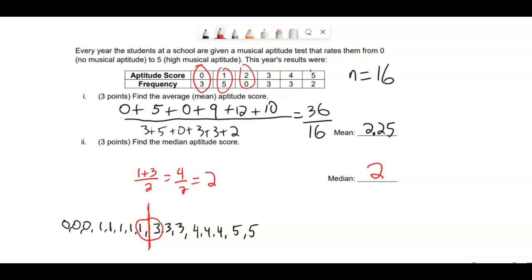If there's an odd number, there will be an actual number in the middle. If there's an even number, there's a gap in the middle. That's when you mean the two next to the gap.